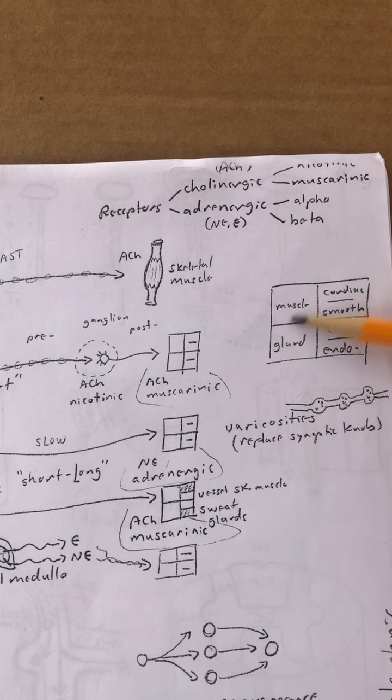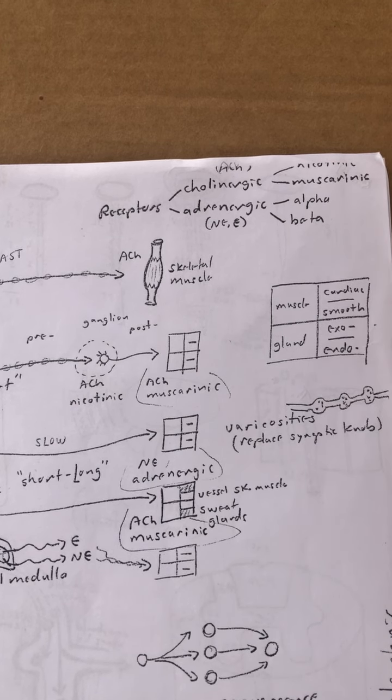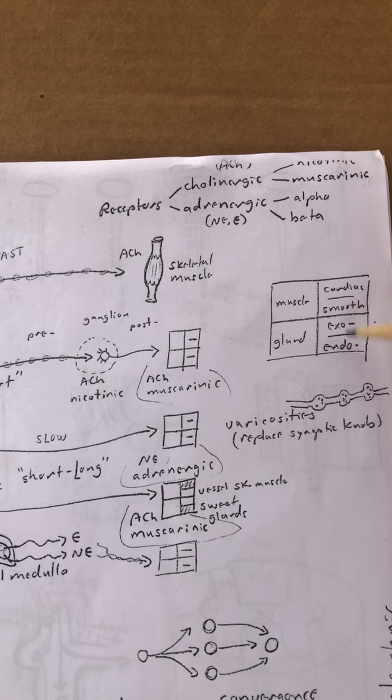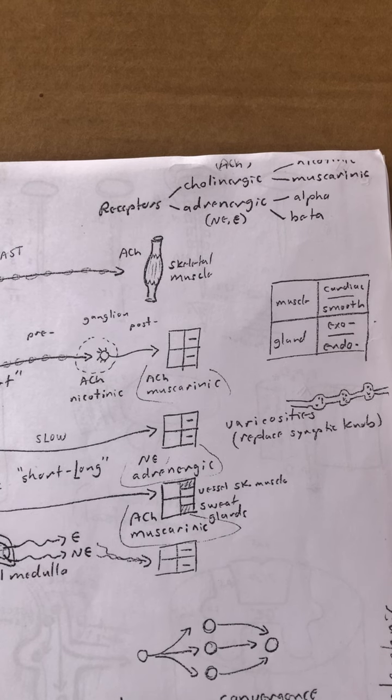There are two targets that can go out to, muscles or glands. And there's two kinds of muscles, cardiac and smooth, and two kinds of glands, exocrine and endocrine. So two, two, two, all over the place.